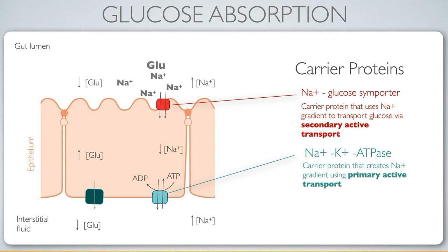The name of the sodium-glucose symporter isn't as important as the principle: it is using that source of potential energy — the concentration difference in sodium — and the transport it facilitates is known as secondary active transport, in contrast to the primary active transport provided by sodium-potassium ATPase.